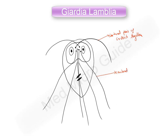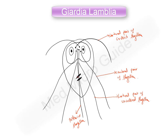This is the central flagella — they will be in pairs. This is the lateral uncrossed flagella. These are the posterior or caudal flagella. That is the median body and that is the parabasal body, from which the axostyle as well as the flagella will appear. This is the anterior sucker or ventral disc.